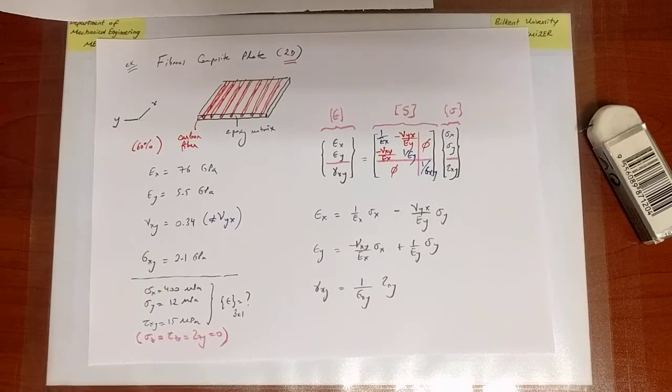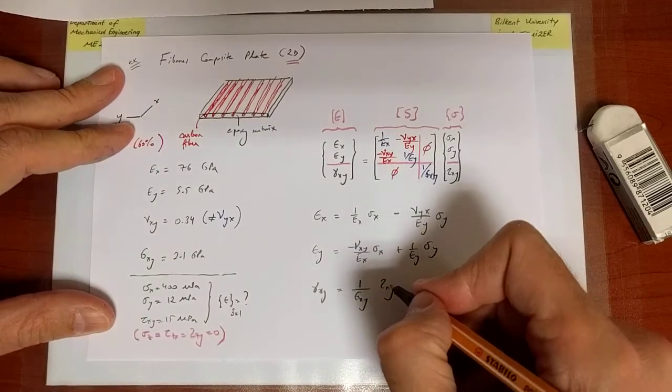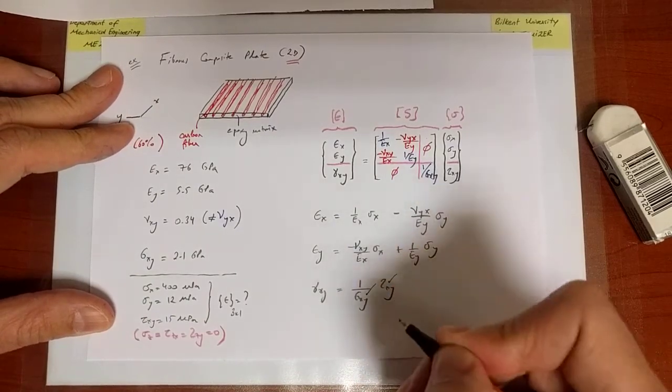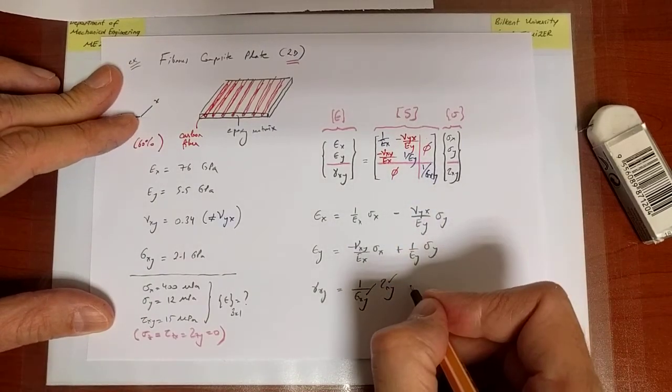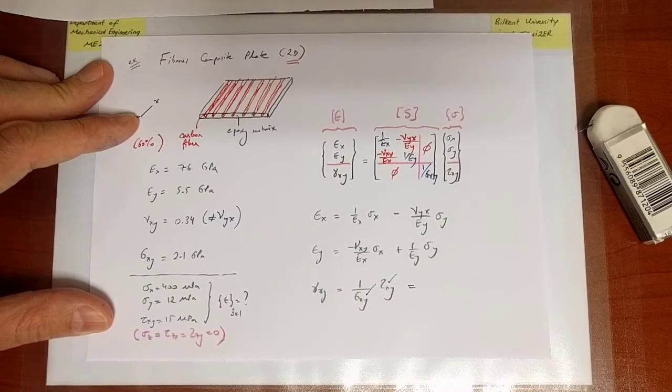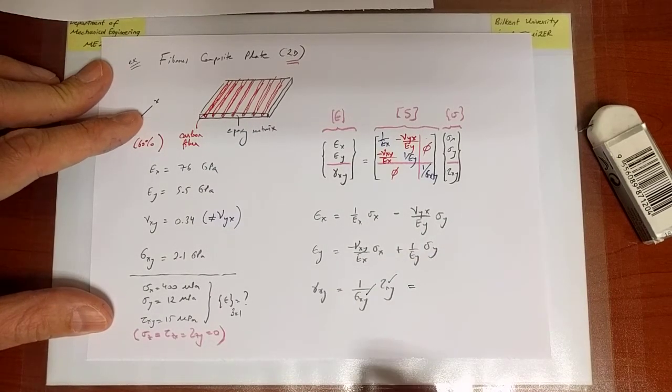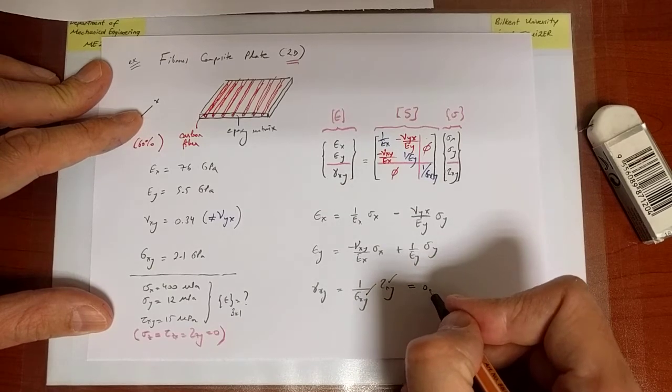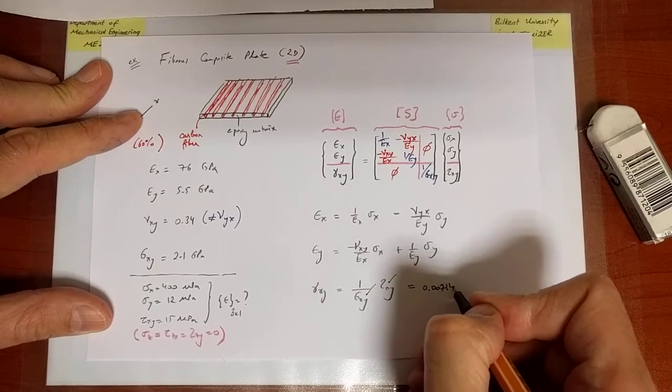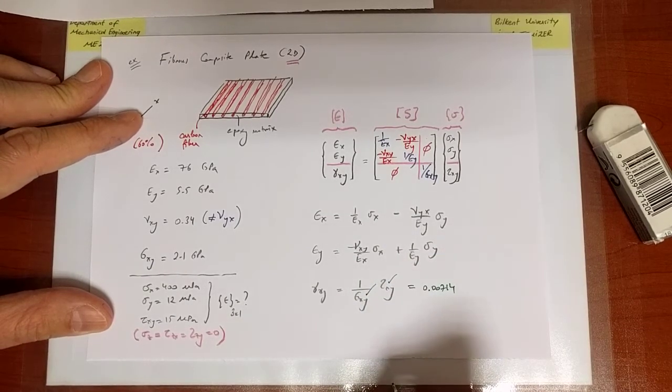Gamma_xy is equal to 1 over Gxy tau_xy. In this problem, two of the parts are easy to solve. Tau_xy is provided, Gxy is provided, and therefore I can immediately make those substitutions. You would find that gamma_xy equals 0.00714.